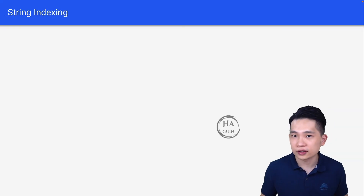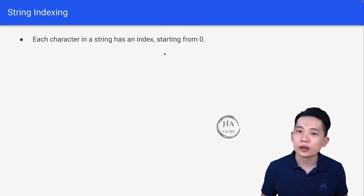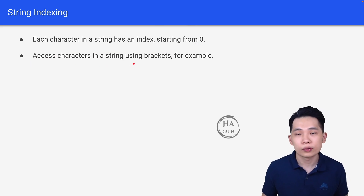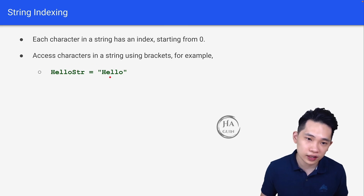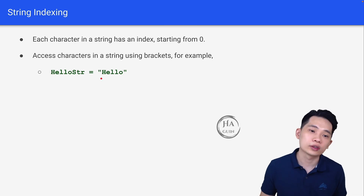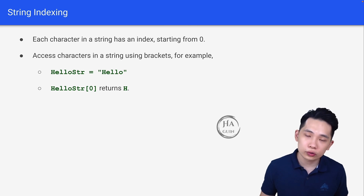For string indexing, each character in a string has an index starting from zero. This means we can access characters in a string using brackets. For example, hello_string = "Hello", and hello_str[0] returns 'H'. The index goes zero, one, two, three, four — so index zero returns 'H'.